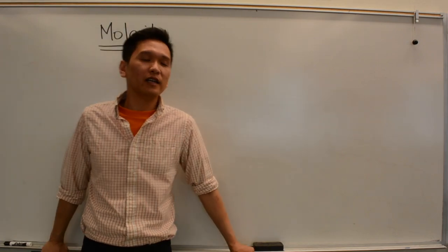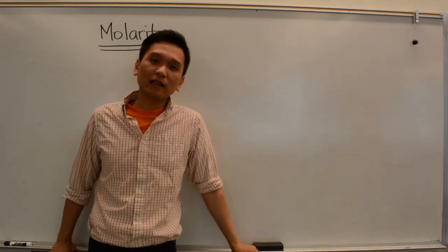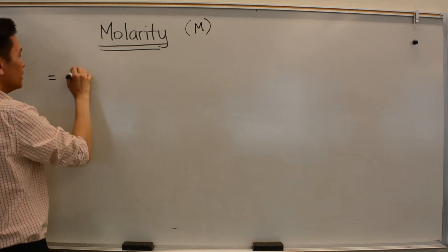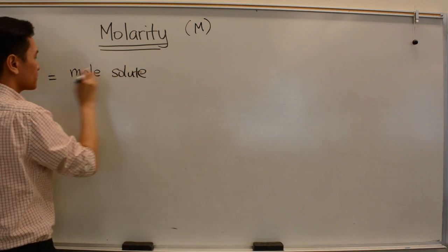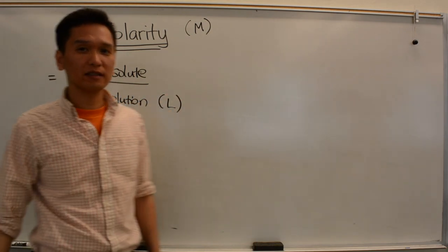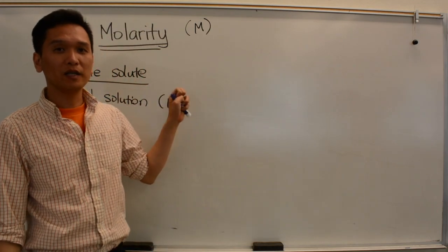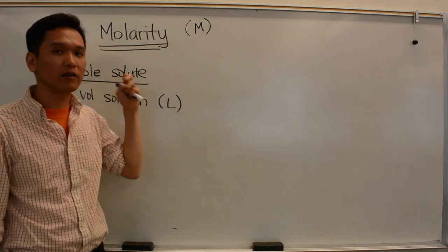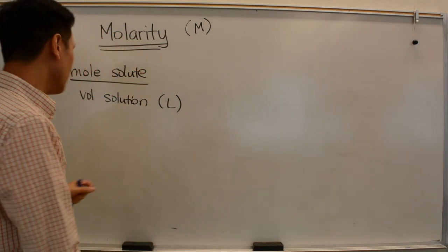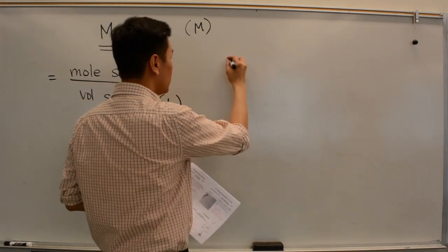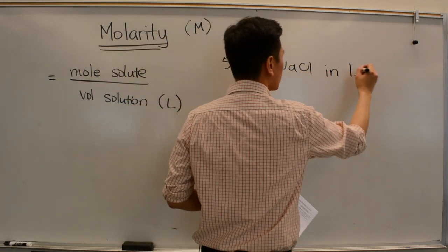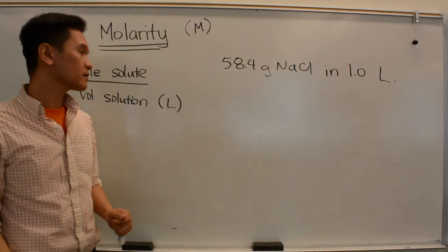Our last unit for concentration is molarity — the one most important in chemistry. You will see this kind of unit in the lab. Molarity is abbreviated as capital M. The definition of molarity is moles of solute over volume of solution, specifically in liters — not milliliters, but liters. So you have to first convert everything to liters.